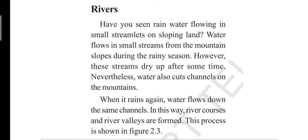How are rivers formed? First, the definition: a large natural stream of water is called a river. Many of you have seen a river or taken a holy bath in one. There are two types of rivers: perennial rivers and peninsular rivers. Perennial rivers are evergreen rivers — they flow throughout the year.